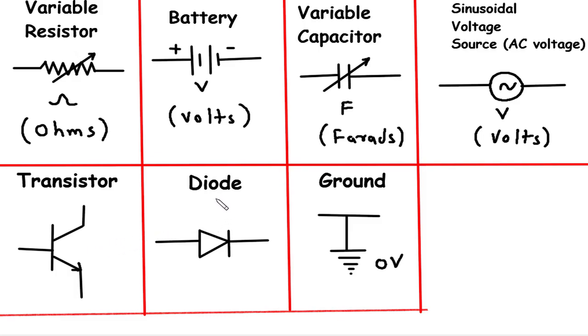10. Diode. The next component is the diode. A diode is a two-terminal electronic device that allows current to flow in only one direction while blocking it in the opposite direction. It is represented by an arrowhead pointing towards the direction of permitted current flow. Diodes are widely used for rectification, signal modulation, and protection against reverse current flow.